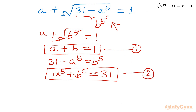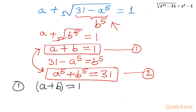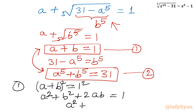Now we solve this system: equation 1 is a plus b equals 1, equation 2 is a to the power 5 plus b to the power 5 equals 31. I will square both sides of equation 1: (a plus b) squared equals 1, giving a squared plus b squared plus 2ab equals 1. Therefore a squared plus b squared equals 1 minus 2ab — call this equation 3.